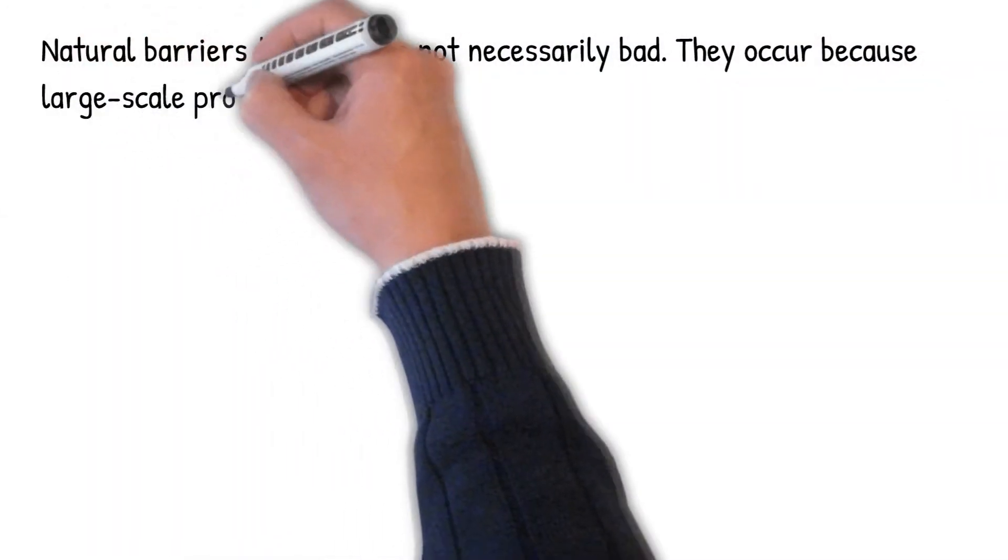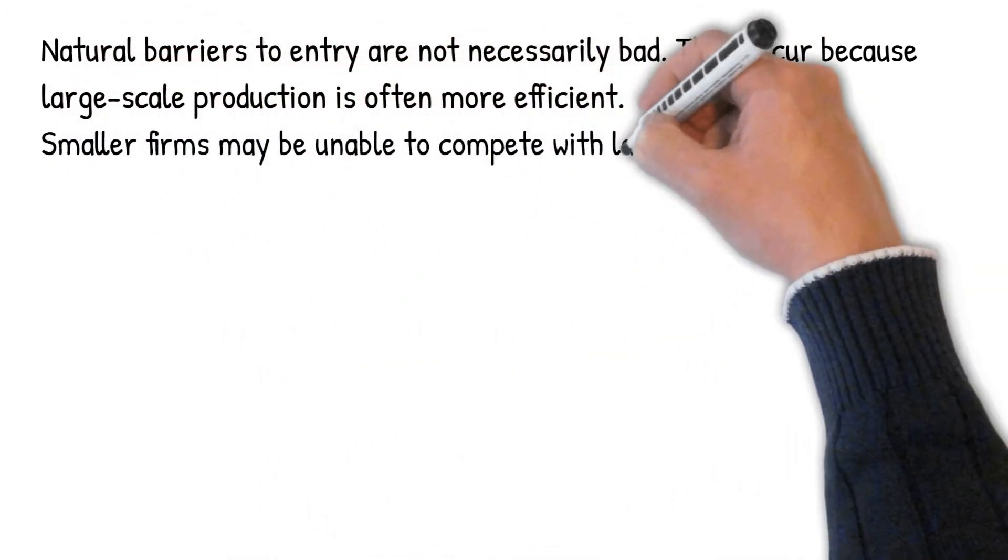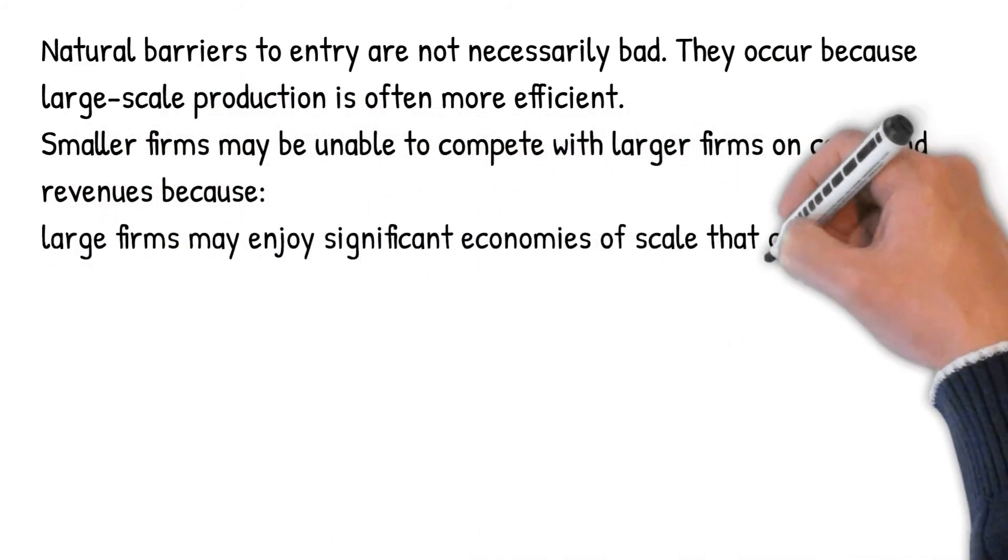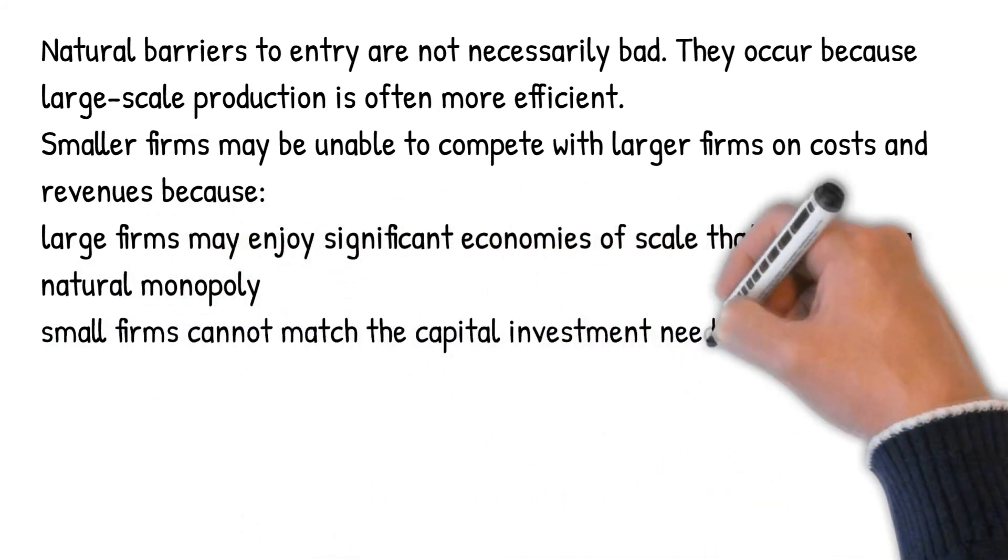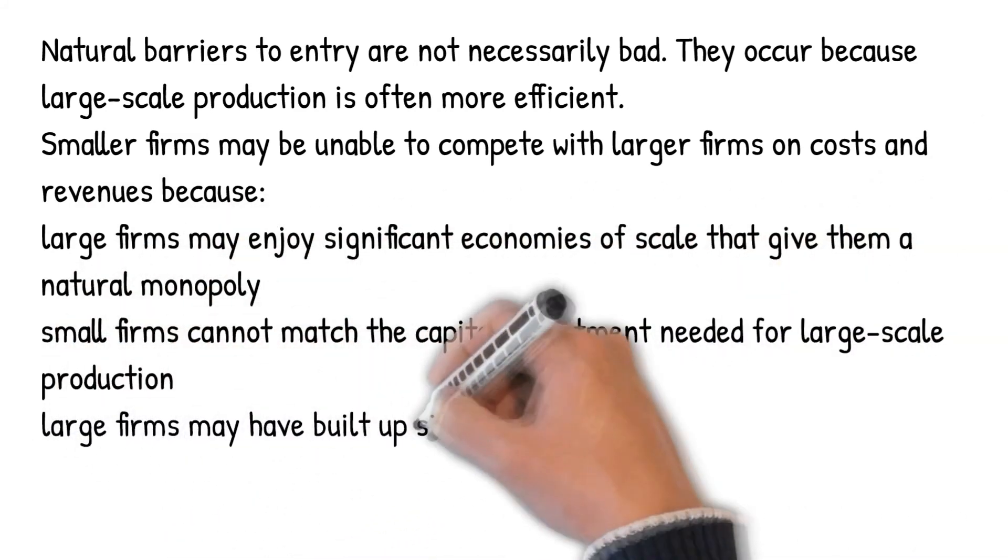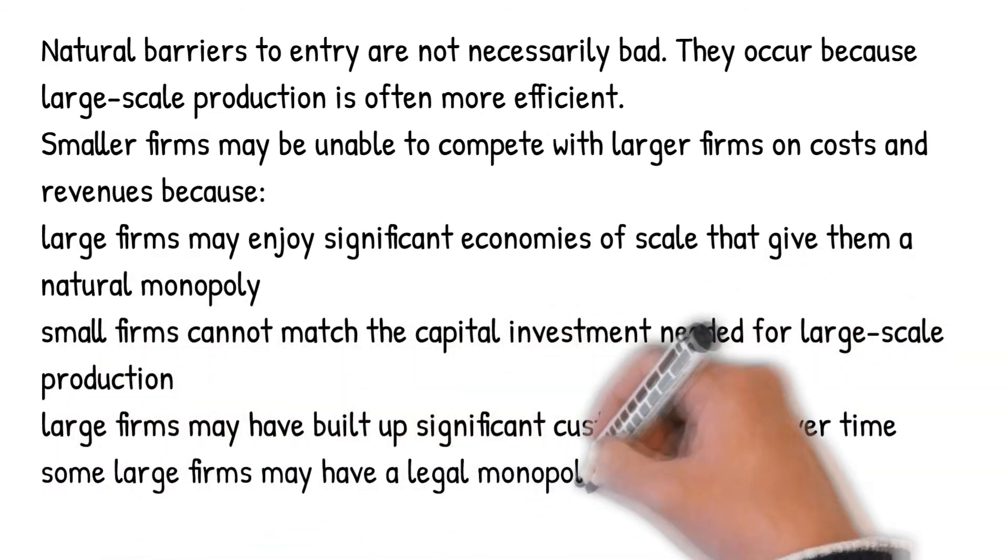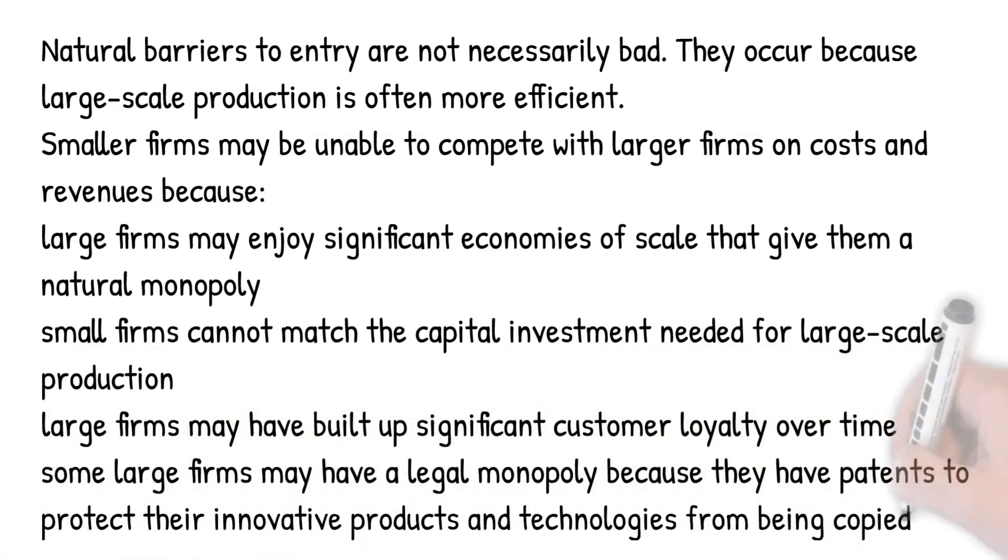But, natural barriers to entry are not necessarily bad. They occur because large-scale production is often more efficient. Smaller firms may be unable to compete with larger firms on costs and revenues because large firms may enjoy significant economies of scale that give them a natural monopoly. Small firms cannot match the capital investment needed for large-scale production. Large firms may have built up significant customer loyalty over time. Some large firms may have a legal monopoly because they have patents to protect their innovative products and technologies from being copied.